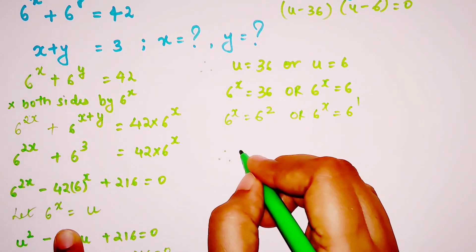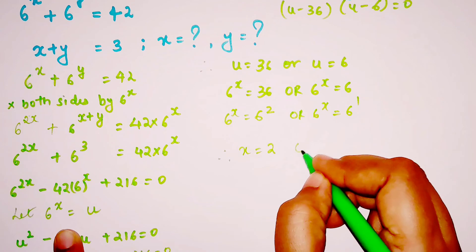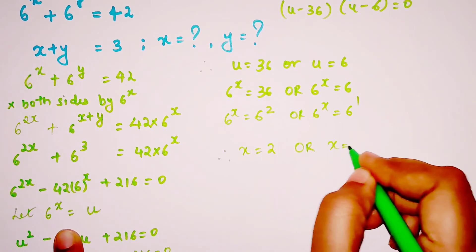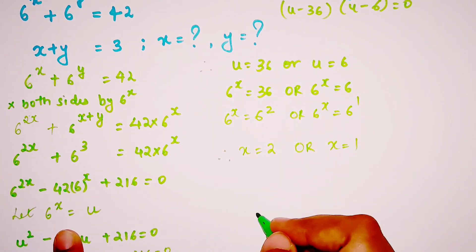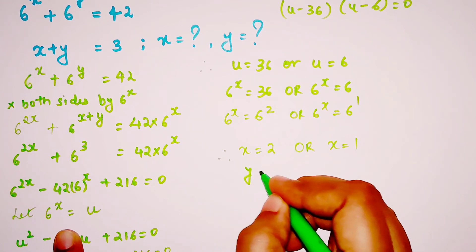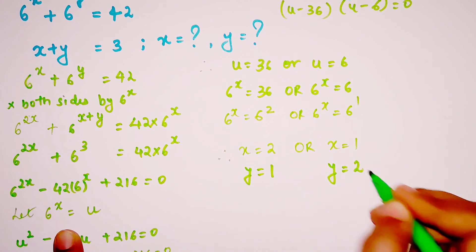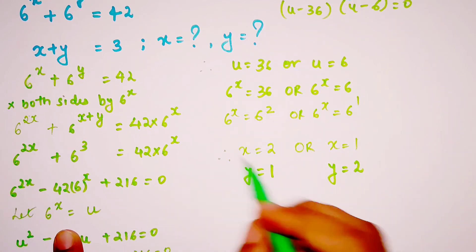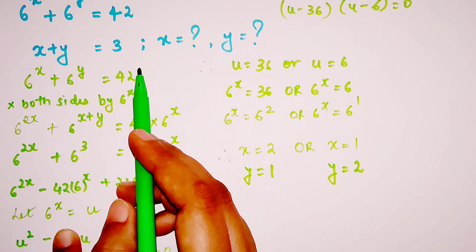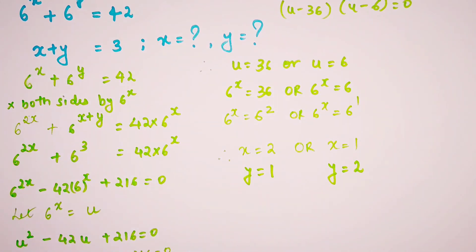When x = 2, I can get my value of y as 1, and when x = 1, my value of y becomes 2. I got this because x + y = 3 was already mentioned to us.